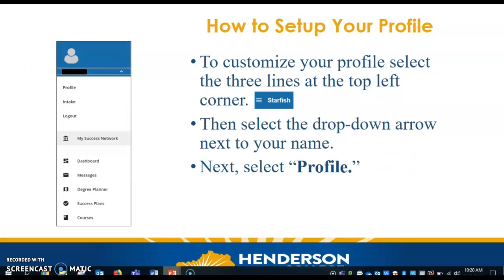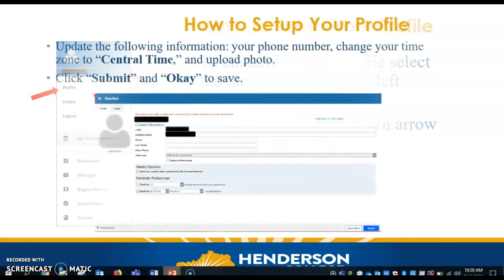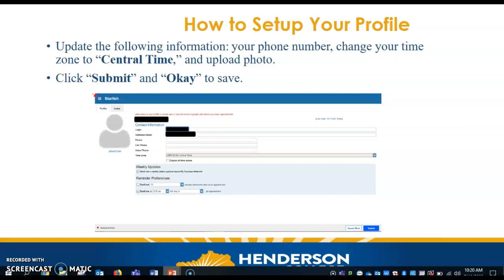Now let's talk about how to set up your profile in Starfish. To customize your profile, you'll select the three lines at the top left-hand corner — this is the icon drop-down. You'll click the drop-down next to your name, then select Profile. The information you'll need to update includes your phone number, your time zone (change that to central time), and upload a picture so we can see who you are. Once you're done, click Submit and OK to save.